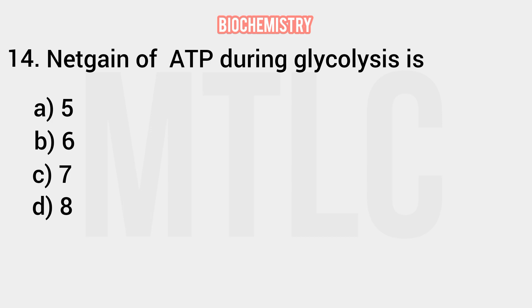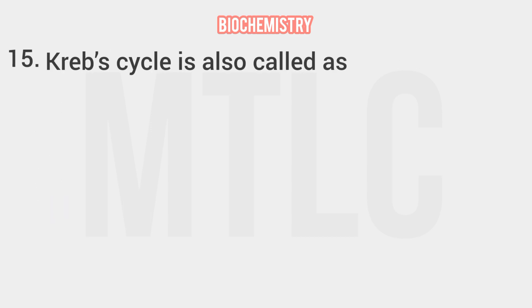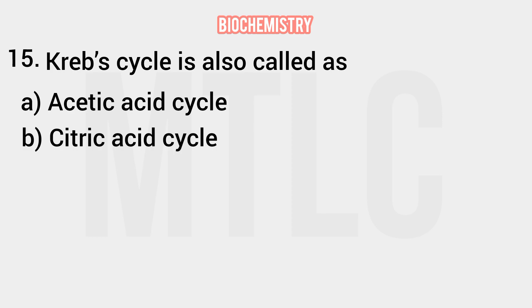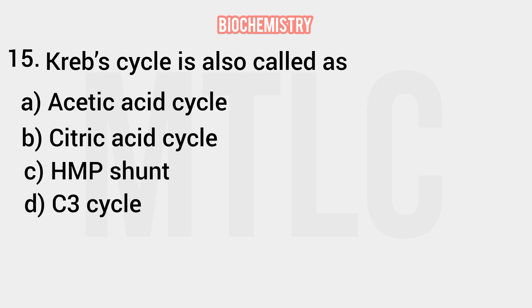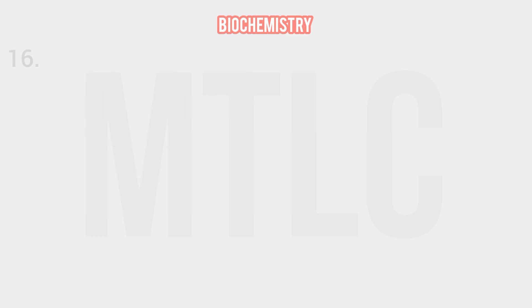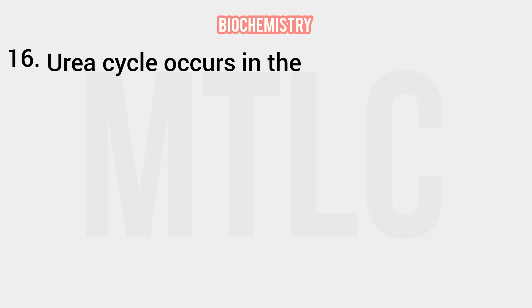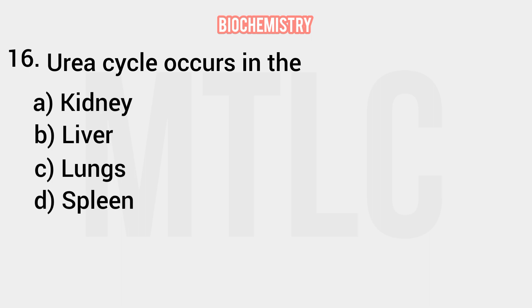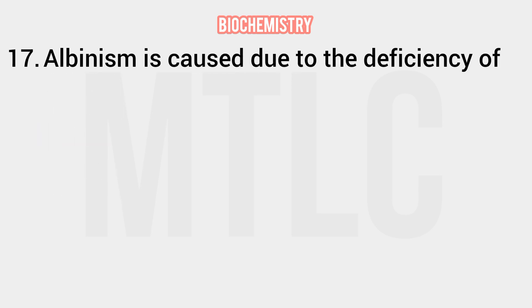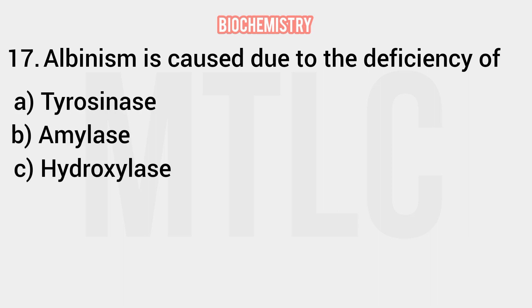Glycolysis is the breakdown of glucose. Regarding the urea cycle, most metabolism occurs in the liver, so the right answer is liver. Albinism is caused due to the deficiency of the enzyme tyrosinase — the right answer is tyrosinase.